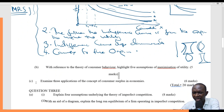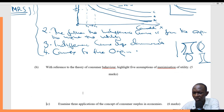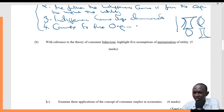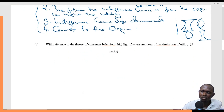Now let's come to part B of this question. With reference to the theory of consumer behavior, highlight five assumptions of maximization of utility.